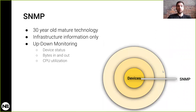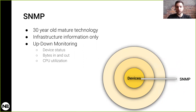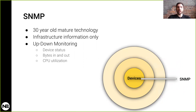SNMP — most of you know about this already because it's almost 30 years old, standardized in the 1980s. It was the most basic type of monitoring at the time. When it started, it basically just monitored hardware devices giving you up/down notifications, but now it can give you status information, types of bytes in and out, device status, even temperature. However, if there are any issues with the device, you won't receive any alerts until after users have already experienced some sort of issue.